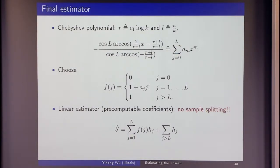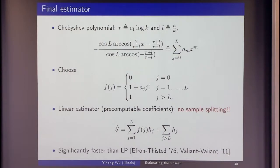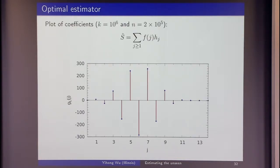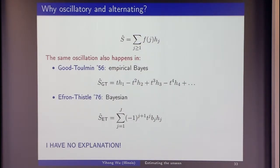There is no need to split samples — I do it in one shot. It's also faster than linear programming. The sub-exponential square root in the exponent comes from a cosine expansion. The variance is a smaller term. The coefficients computed from the Chebyshev polynomial grow and then die — similar to the classical estimators. I have no first-principles intuition for why alternating signs and oscillating coefficients help. In hindsight it's optimal, but it remains mysterious.